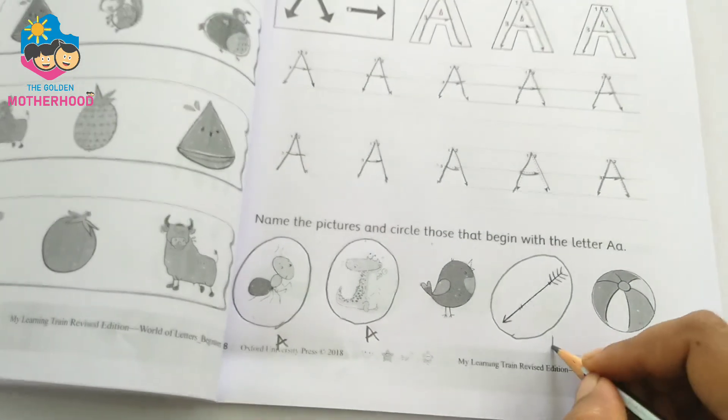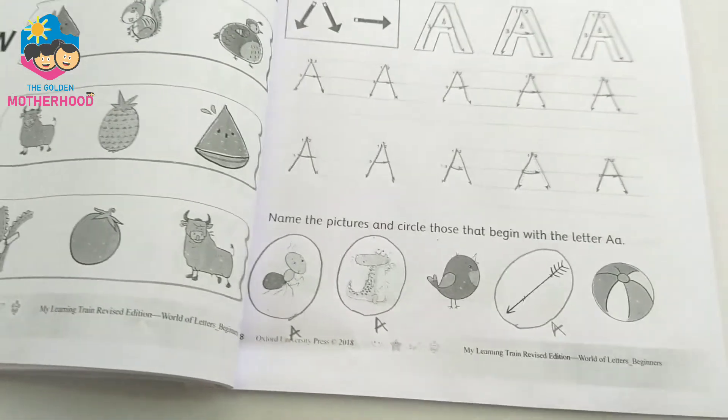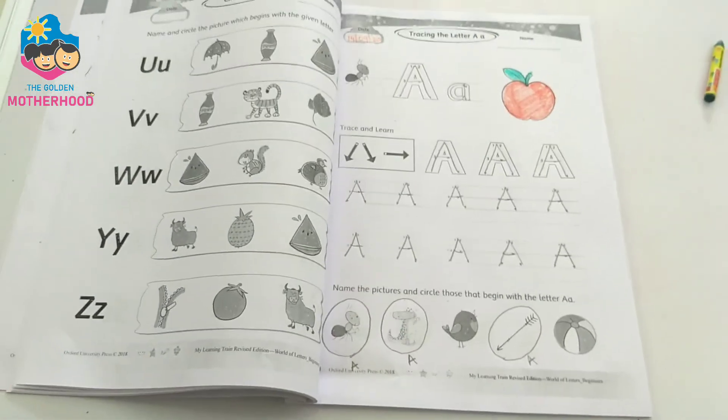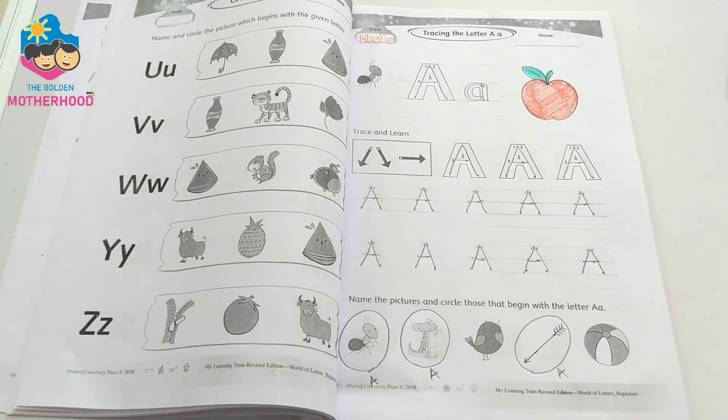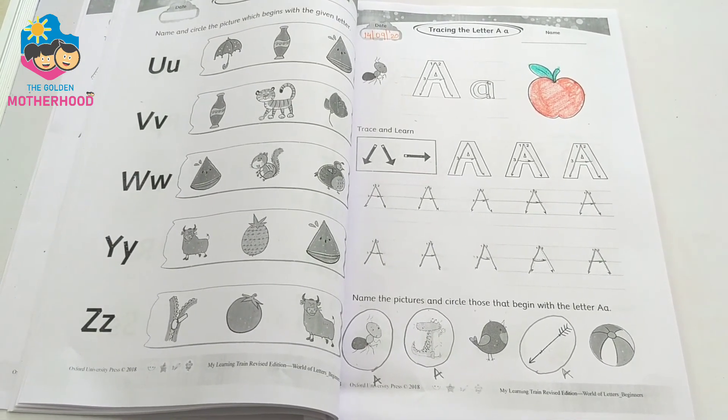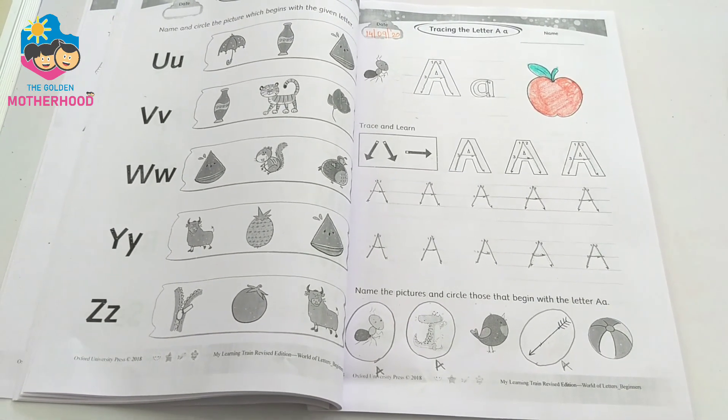This is B for bowl. We will not circle it. Please students complete your homework and submit in the WhatsApp. Bye bye. See you. Take care.